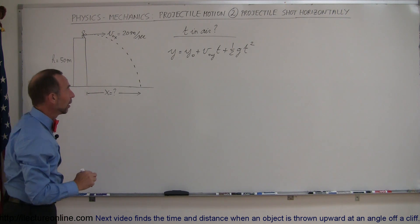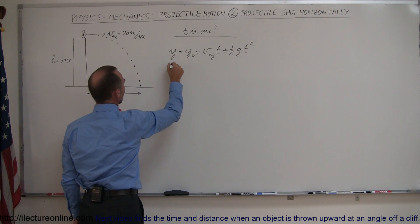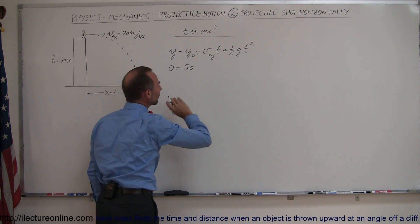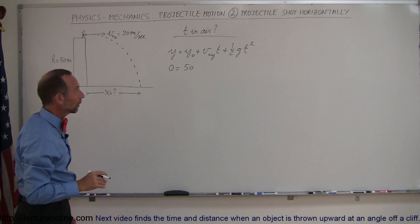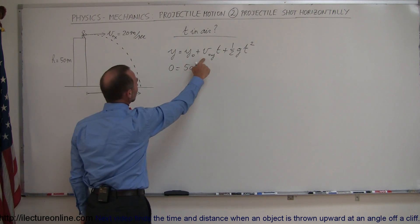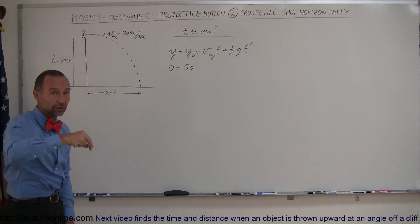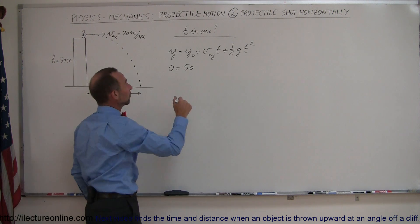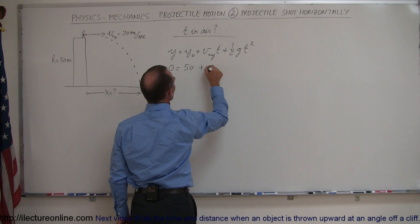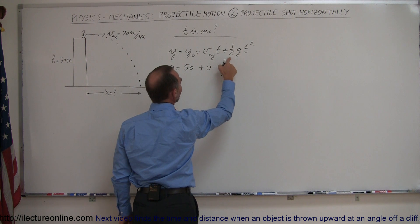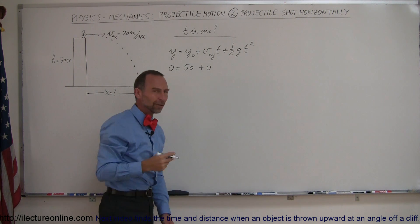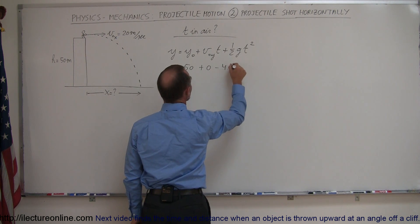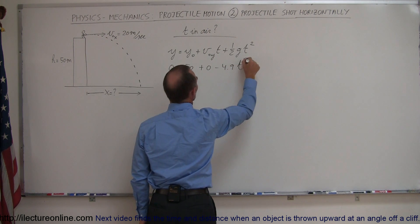So let's solve that equation for time. Our final height would be zero. Our initial height is 50 meters. Notice I will leave out the units to make the equation cleaner and easier to work with. Our initial velocity in the y direction is zero because we do not throw it downward or upward. We simply throw it straight out, so it has no initial velocity in the y direction. So this is plus zero. And then one-half times g. Since g is minus 9.8 meters per second squared, this is minus 4.9 times t squared.